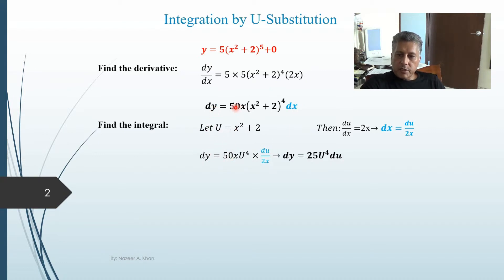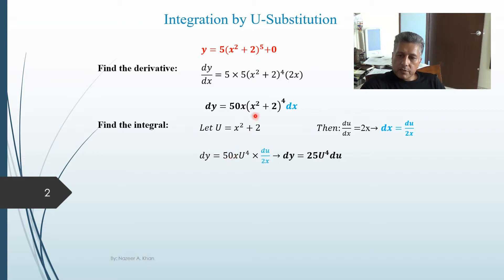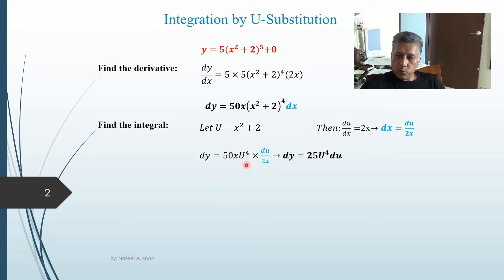Now substituting, we have dy equals 50 — the coefficient stays — times u to the fourth, multiplied by dx which is du divided by 2x. This is an important step because we are dividing out the derivative we multiplied in earlier. The x cancels out, and 2 divides into 50 giving 25, so it becomes 25u to the fourth du. Now we are in the form where we can apply integral notation and perform the integration.